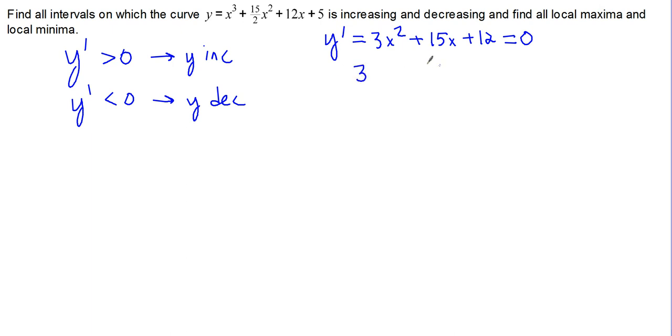Well, first thing we can do to figure that out is factor out the 3. 3 times x squared plus 5x plus 4 is equal to 0. A little more basic factoring, and we get 3 times x plus 4 times x plus 1 is equal to 0. Then we can use the 0 product property and set each piece of it equal to 0, because if one piece of it equals 0, then the whole thing must.